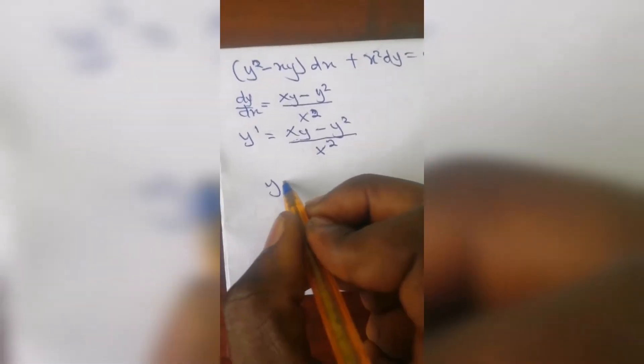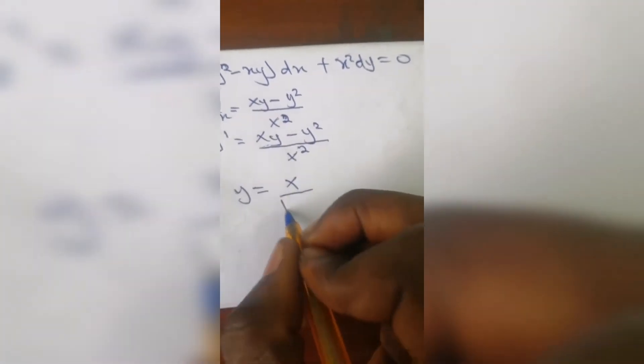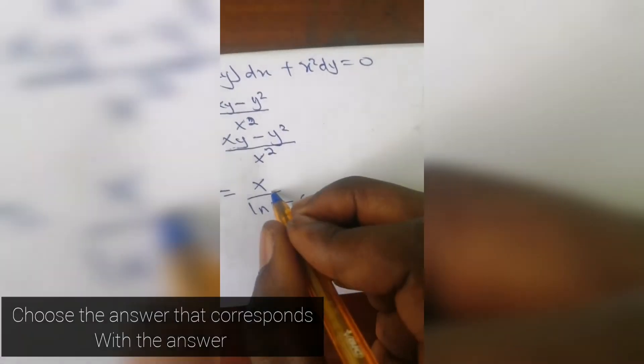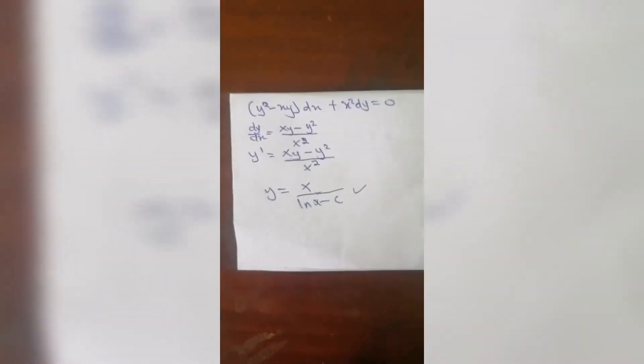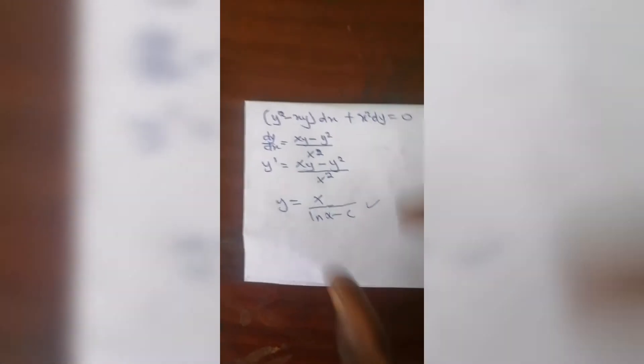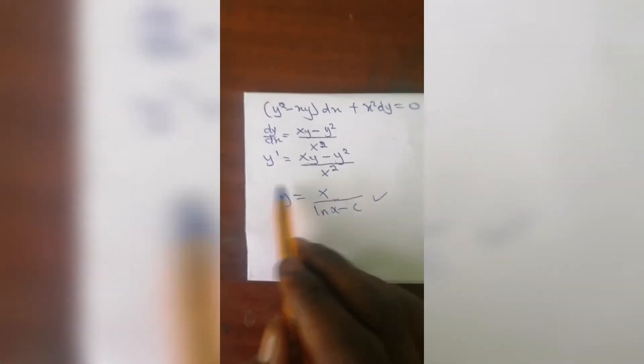Using y = x / (ln x - c), this was the answer given to us in the preamble. That is why y is equal to x over ln x minus c. Now when the answers are given to you and y is the subject, you can use this procedure.